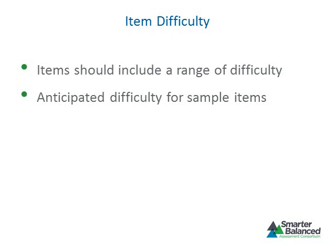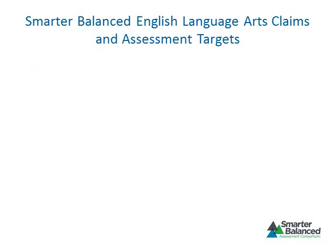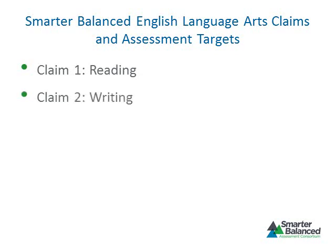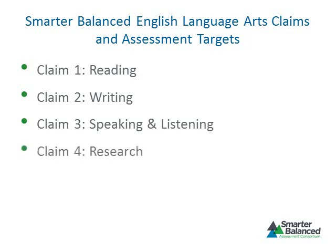Now let's examine the claims and assessment targets contained in the Smarter Balanced Assessment Consortium ELA Literacy Content Specifications. Smarter Balanced has defined four claims, or broad statements, that will be made about learning outcomes. Claim 1 focuses on reading, Claim 2 focuses on writing, Claim 3 focuses on speaking and listening, and the final claim focuses on research.